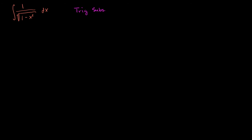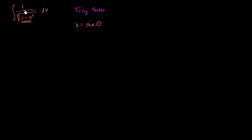The trig substitution we'll do — the big clue here is when we see 1 minus x squared. In fact, if we ever see an a squared minus x squared (and 1 is 1 squared minus x squared), it's a pretty good clue that we'd want to substitute with something times sine of theta. If we say that x is equal to sine of theta, then what we have under the radical becomes 1 minus sine squared theta, which is cosine squared theta, and we can take the square root of that.